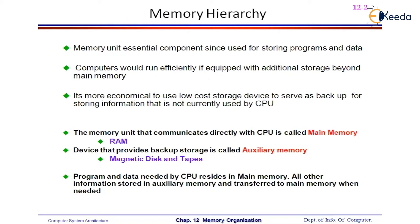We require additional storage to store all programs and files, because main memory is too small to accommodate everything. For example, your hard disk size could be 1 TB to 2 TB, while main memory is around 2 GB to 4 GB, a maximum of 8 GB. So if you want to execute multiple programs, the total number of programs we have cannot be accommodated in main memory at any one time. That is why we require an external hard drive — some additional memory — to store all files and programs.